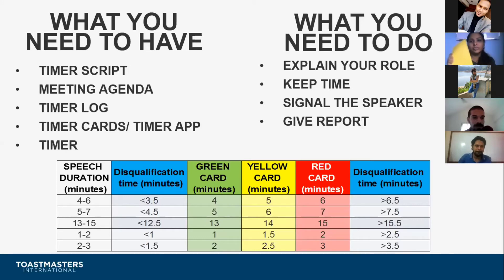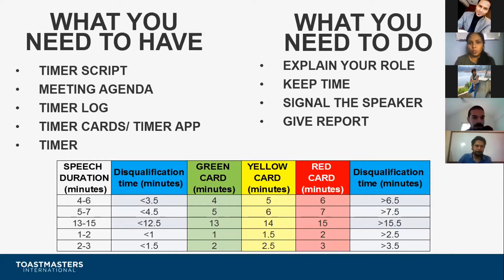The yellow card is flashed when the speaker is somewhere midway between the minimum and the maximum time allotted to her. The red card is flashed when the speaker has spoken for the maximum time allotted. Once the red card is flashed, the speaker has a 30-second grace period to wrap up her speech. If the speaker goes over the grace period, she shall not be eligible for the best speaker award at the end.